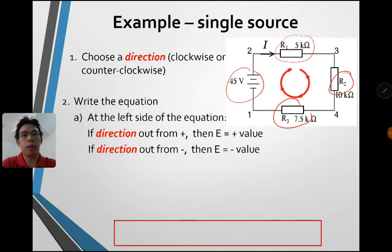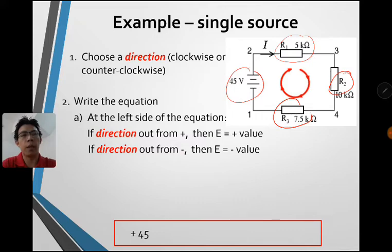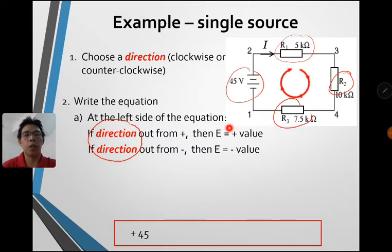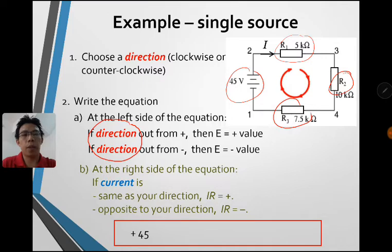Now we write out the equation. On the left-hand side, we write about the battery's EMF. In this case it's positive 45 because the current is coming out from the positive terminal. Remember this rule when applying to more complicated circuits. If the direction of current comes out from the negative terminal, then we choose E as a negative value. Direction here means the direction you have chosen.